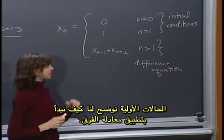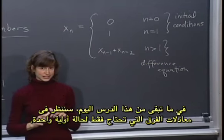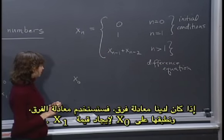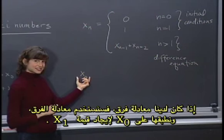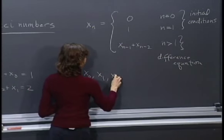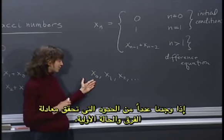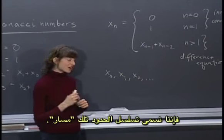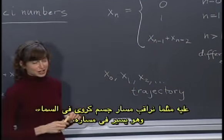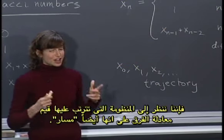Initial conditions tell us how to get started applying our difference equation. For the rest of this lesson, we're going to be looking at difference equations that only require one initial condition, which we'll always call x0. If we also have a difference equation, we can apply it to x0 to compute x1, apply it to x1 to compute x2, and so on. If we have a set of terms that satisfy a difference equation and an initial condition, we call that sequence of terms a trajectory.